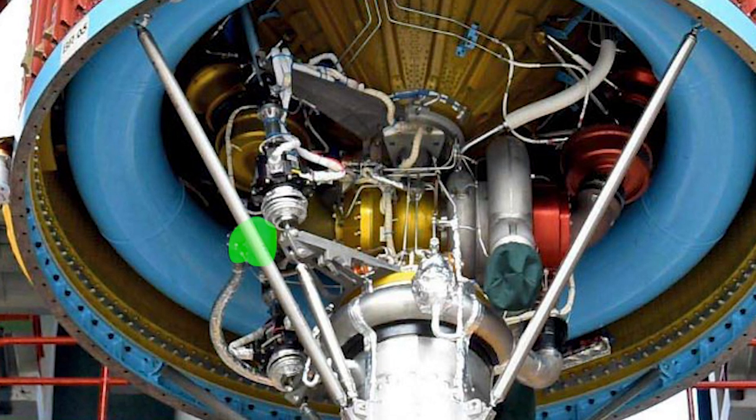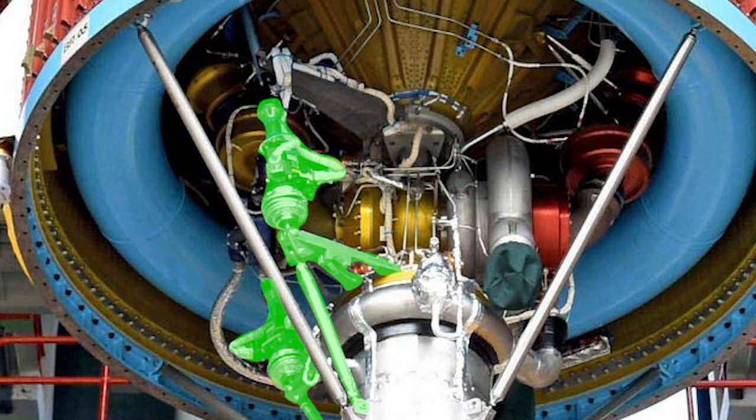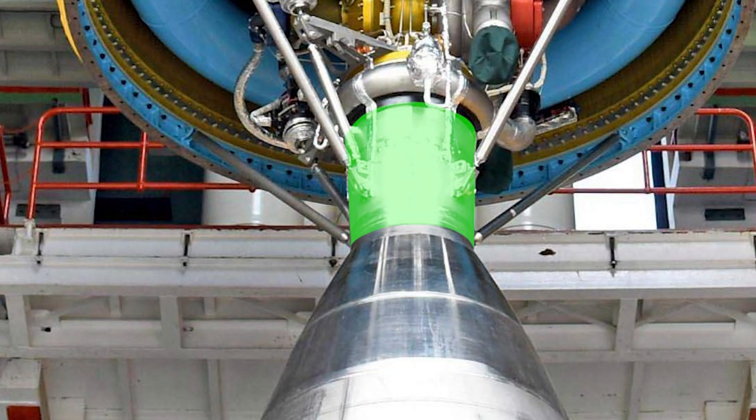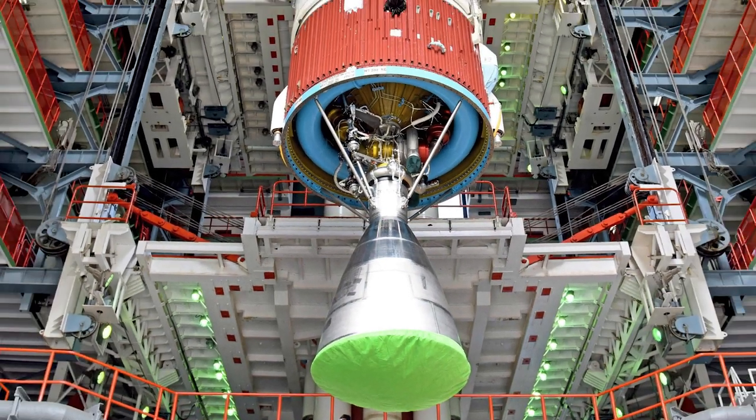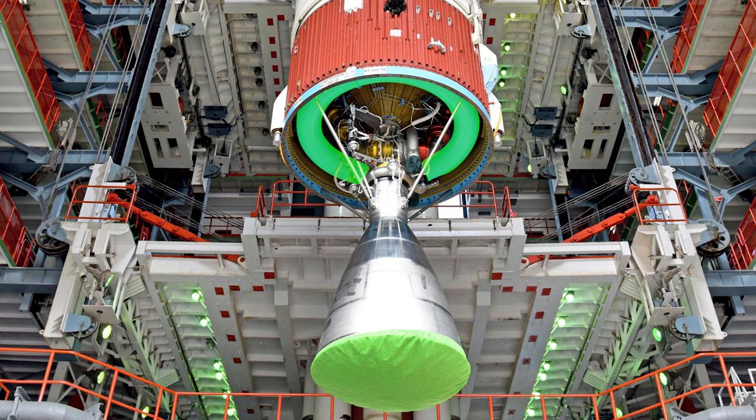The water pump, two thrust vector control actuators, combustion chamber and the exhaust nozzle. And also this blue donut shaped water tank through which the water is pumped to the gas generator for cooling.